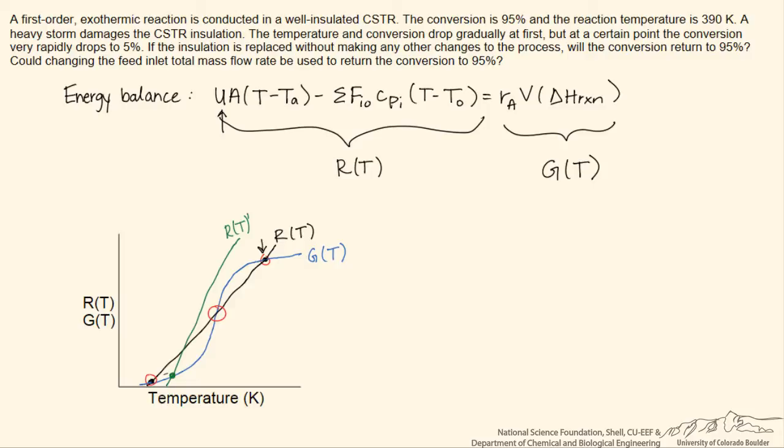And we'd expect that if we were under a situation where we had these multiple intersections, that we wouldn't necessarily return to the same level of conversion.